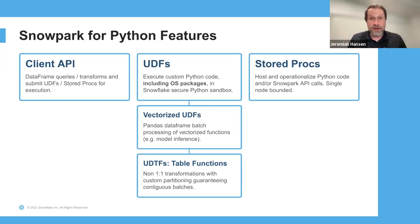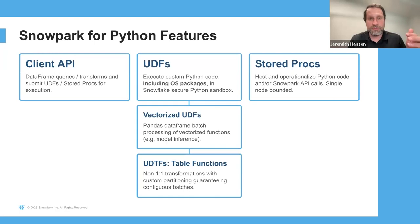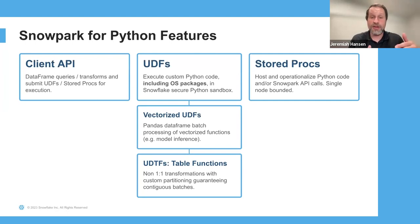The UDTF, or user-defined table function, is different in that you can pass arguments but you're not operating on a single row at a time — you're able to return a table of data, not just a scalar value. Then stored procedures are our primary focus today. This is where you host any arbitrary Python code and have it execute. You can think about this as code you would have in a notebook in a Spark-based solution, running instead inside of a stored procedure in Snowflake.